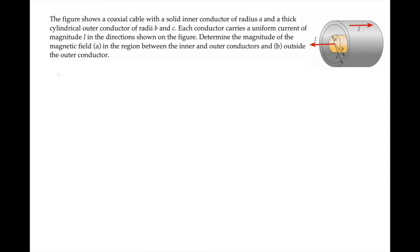This problem gives us a coaxial cable with current flowing in different directions along each conductor and asks us to find the magnetic field magnitude in between and outside of the two conductors.